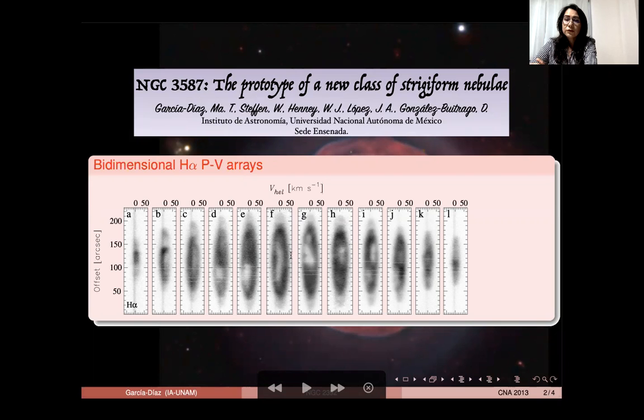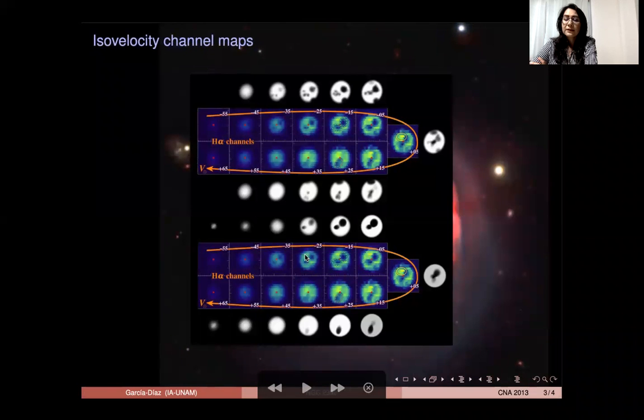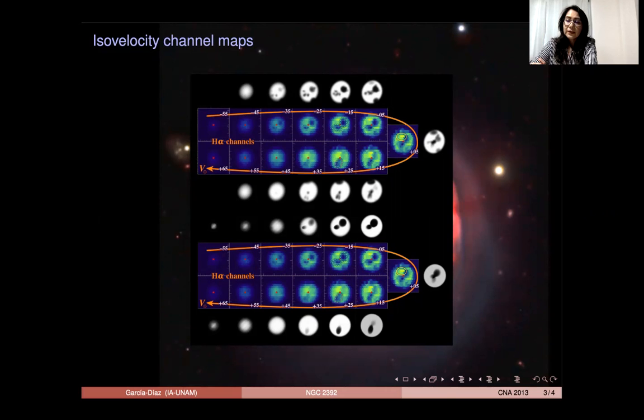However, the hollows do not show a simple bipolar structure. In order to provide an alternative overview of the kinematic structure of the Owl, we construct isovelocity channel maps of the nitrogen two and H-alpha emission lines. Each image is 10 kilometers per second wide.